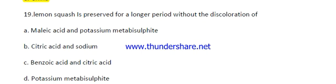Question number nineteen: Which chemical is used to preserve lemon squash? The options are: malic acid with potassium metabisulfite, citric acid with sodium benzoate, benzoic acid with citric acid, or potassium metabisulfite. The right answer is option D — potassium metabisulfite, which is the only chemical used to preserve lemon squash.